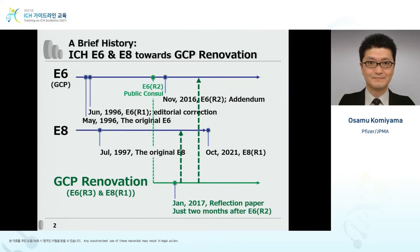I'd like to overview a history of ICH E6 and E8 towards GCP renovation. Until the early 1990s, clinical development of drugs basically involved clinical trials conducted in different countries. The rules and environment for conducting trials differed greatly, and transportation, communication, and information technology were not comparable to what we have today. The differences in regulatory requirements were greatly improved by ICH, which began in 1990.